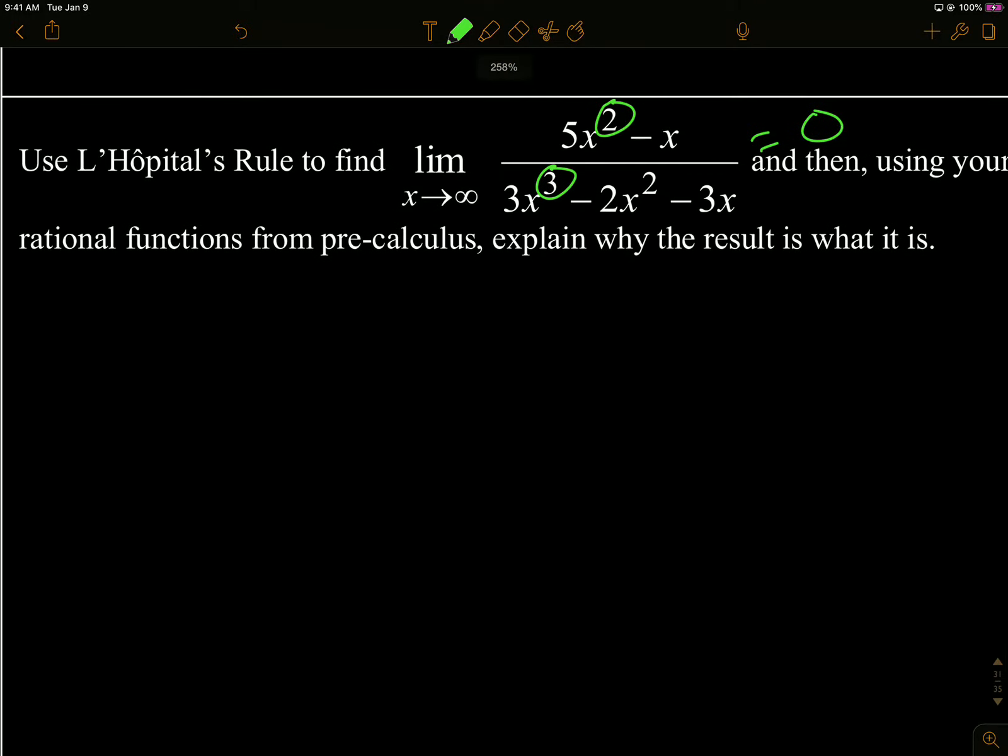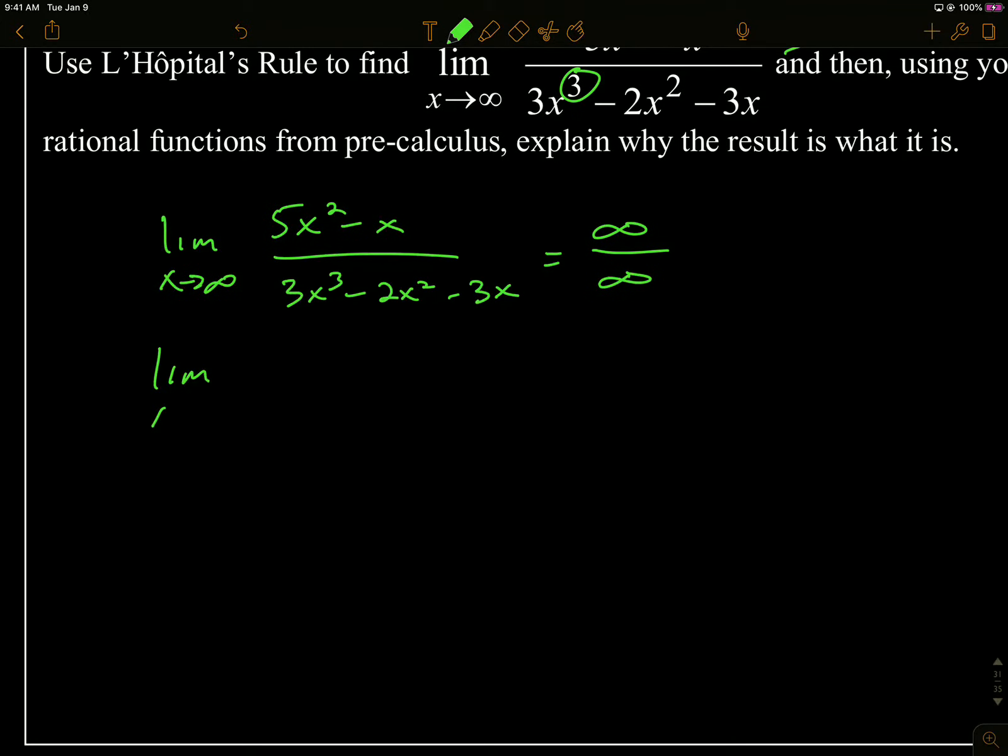We can do L'Hôpital to show that. So as x approaches infinity, I'm going to go 5x squared minus x over 3x cubed minus 2x squared minus 3x. I'm going to get infinity over infinity, so I can L'Hôpital because that's indeterminate. 10x minus 1 over 9x squared minus 4x minus 3. If I plug infinity into that, I'm still getting infinity over infinity.